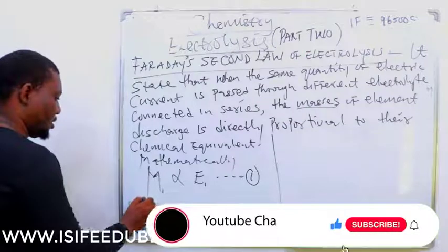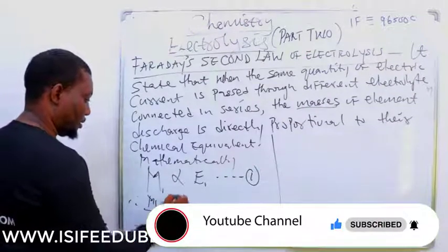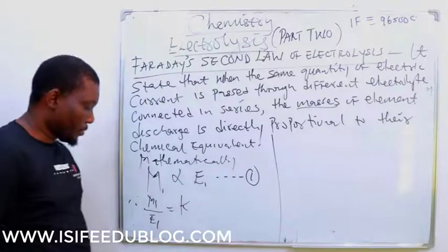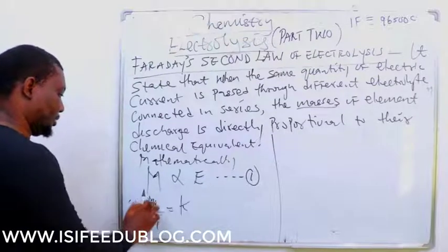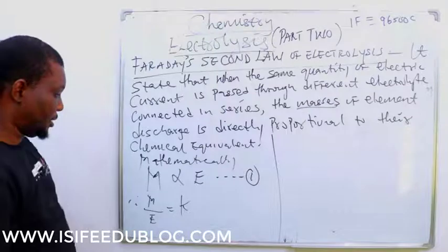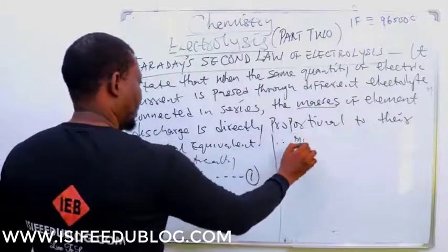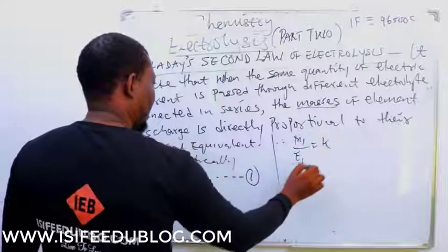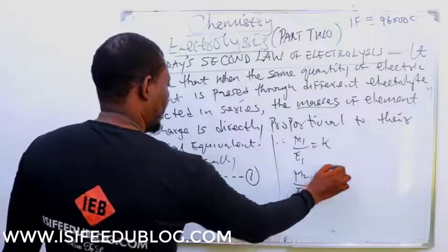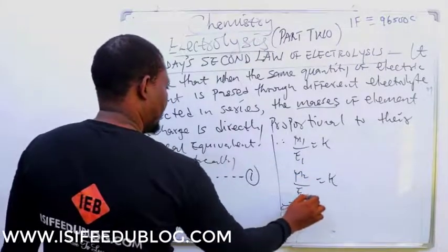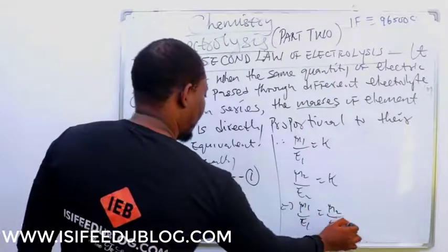So we can have therefore M1 over E1 is equals to constant. This is for this, this is for this. So therefore, we can have M1 over E1 equals to K and M2 over E2 equals to K. This implies that M1 over E1 is equal to M2 over E2.